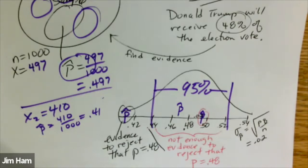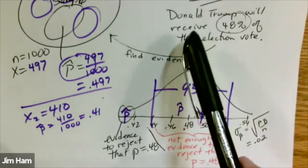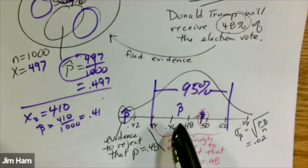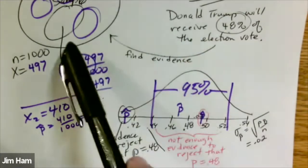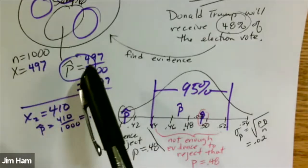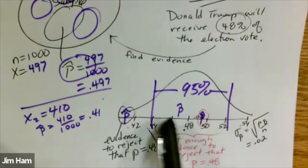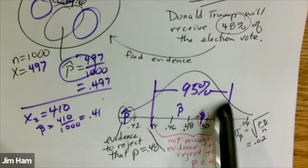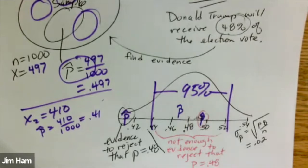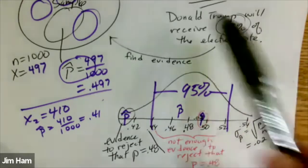So basically, this is the big picture of hypothesis testing. Someone makes a claim. We assume the claim to be true. We go take a sample, calculate a sample proportion, and then plot it on this scale to find out if there's evidence to support the claim or evidence to reject the claim. Now we're going to get into the weeds and I have to explain the five steps of this process.